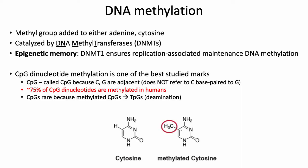Over the next few slides, we'll spend a few minutes talking about DNA methylation. CpG dinucleotide methylation is one of the better studied epigenetic marks. DNA methylation basically refers to a methyl group being added to either adenine or cytosine, and the addition of methyl groups is typically catalyzed by DNA methyltransferases (DNMT). Unlike some histone modifications, DNA methylation is very clearly an epigenetic mark in the true sense of the word — DNA methylation patterns are typically replicated with high fidelity during DNA replication, and this high fidelity memory is achieved through the DNMT1 enzyme.